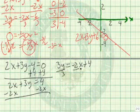Let's divide through by 3. So we have y equals negative 2 thirds x plus 4 thirds.